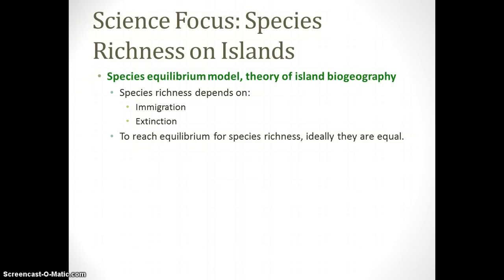To end Section 4-5, we have a science focus on species richness on islands — questions that tend to come up on the test. This is called the species equilibrium model. For an island to be stable, species richness must be balanced at equilibrium, meaning the number of incoming species must match the exiting species. Immigration must equal extinction, and species shouldn't be going extinct faster than new ones arrive.